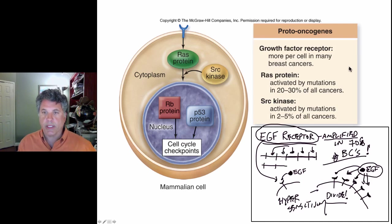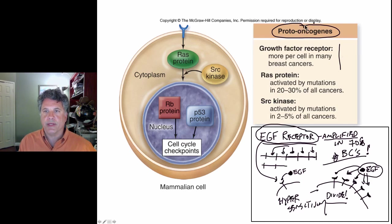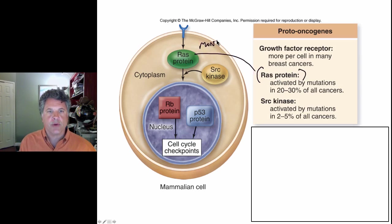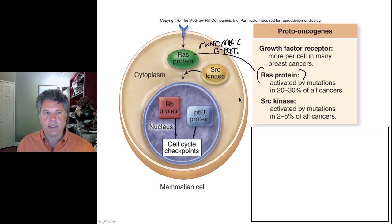That is one case of a proto-oncogene mutation. Now let's move on to the Ras protein, which is a monomeric G-protein — not a heterotrimeric G-protein, but a single monomeric G-protein. As we know from signal transduction pathways, the Ras protein is an intermediary often in the receptor tyrosine kinase signaling pathway.